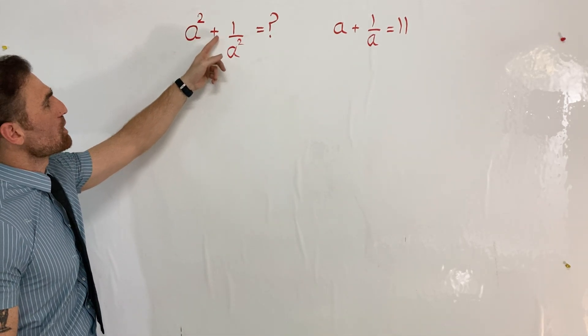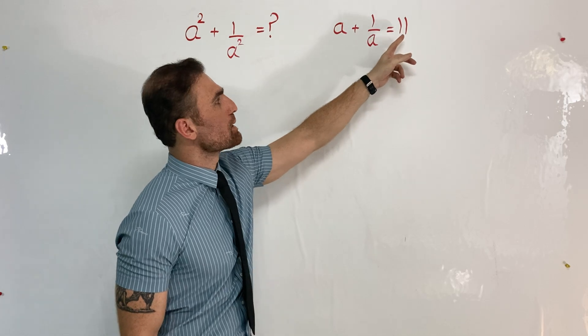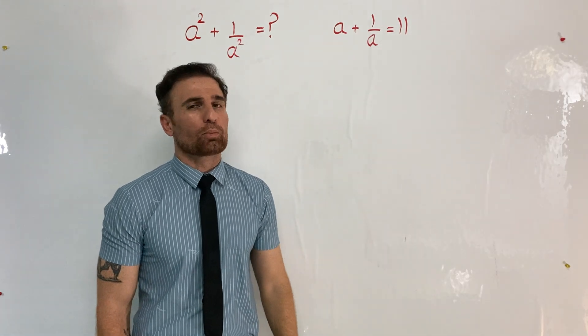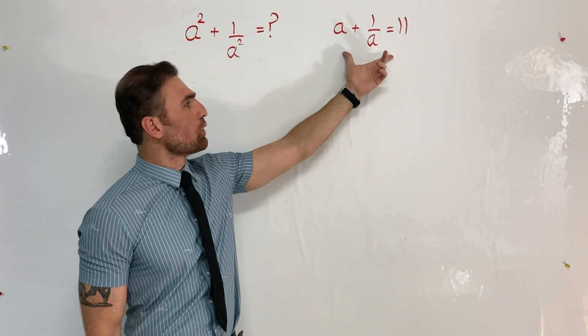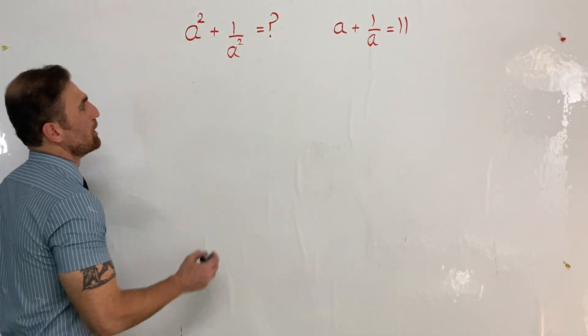Find the value of a² + 1/a² where a + 1/a = 11. To solve the question, I'm going to use this important information: a + 1/a = 11.